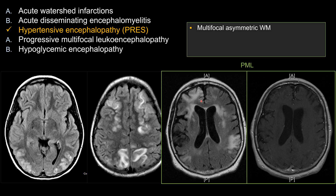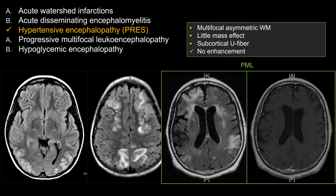For PML, there is bilateral but usually asymmetric involvement of the white matter, often involving the overlying cortex as well. The key feature is that despite the size of the lesion, you should see relatively little mass effect, and it involves the subcortical U-fibers. For board exams, one unique feature of PML is that lesions do not enhance — you can have a quite large lesion with no enhancement. Lack of enhancement and lack of significant mass effect help distinguish PML from malignancy or multifocal glioma. This is PML in an immunocompromised patient.